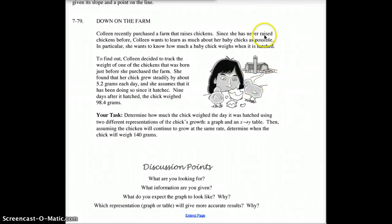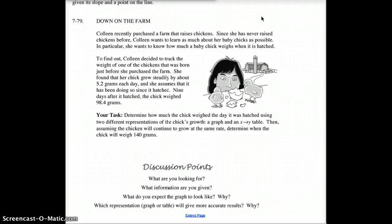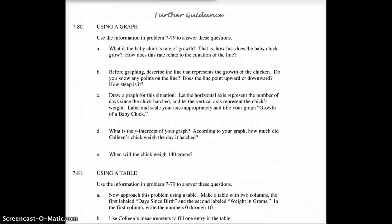Nine days and 98.4 grams. So nine days over, 98.4. And we know the growth rate, we know the slope, because it was growing at 5.2 grams per day. You can probably guess what we're going to be asking next. Knowing that information, we want to know the following.